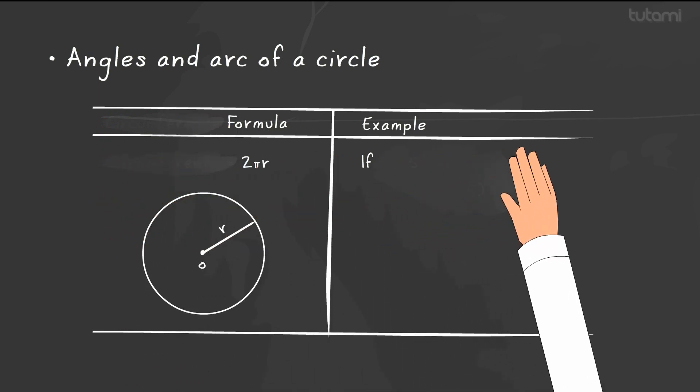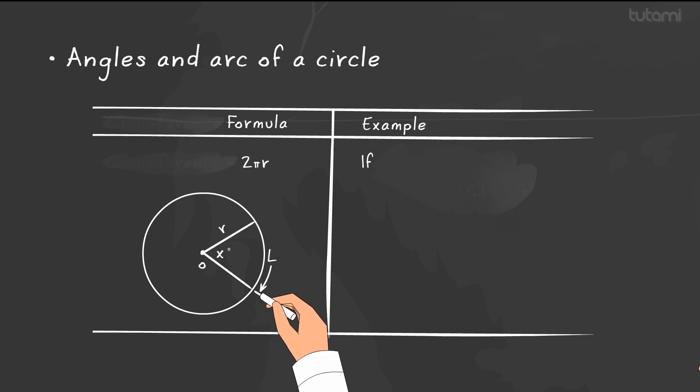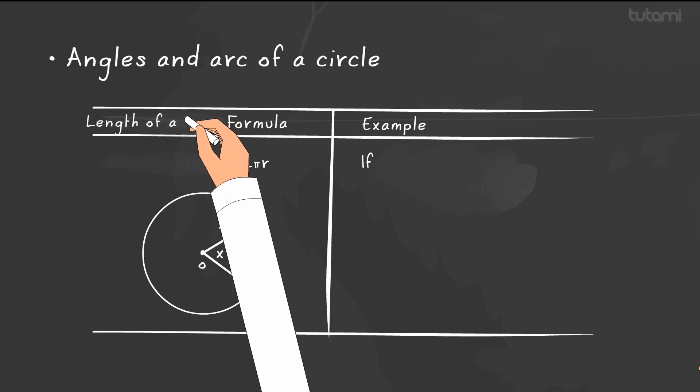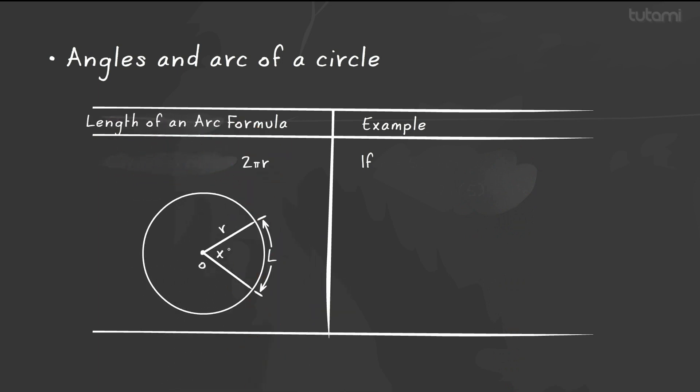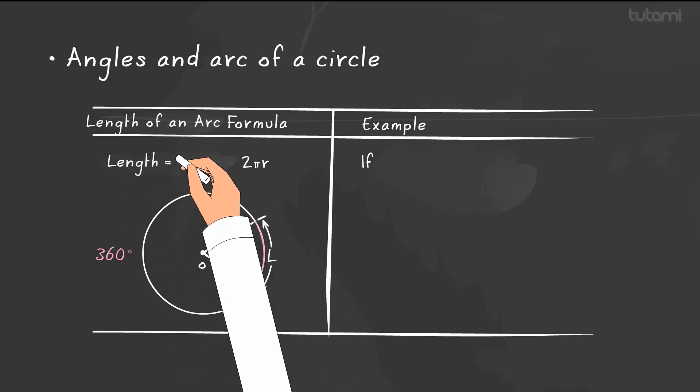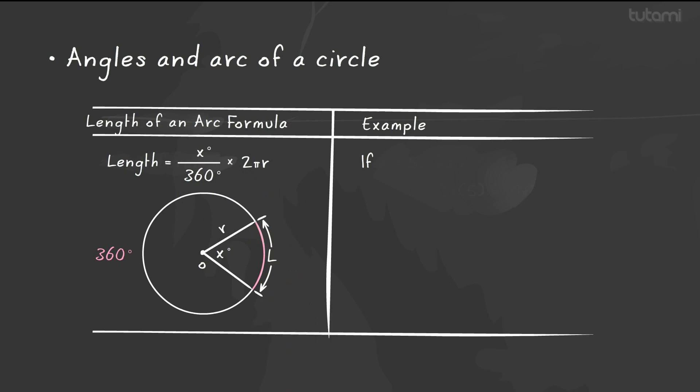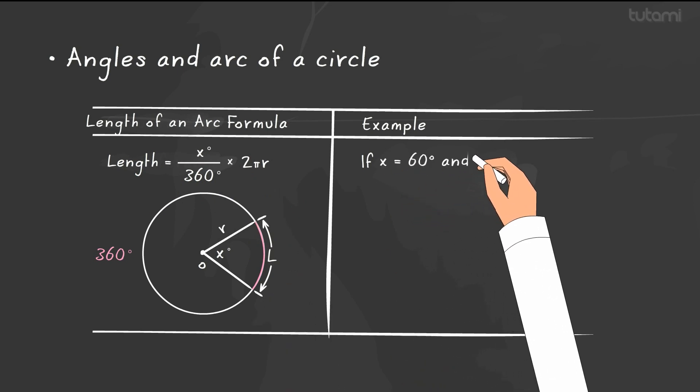The length of an arc is simply the original circumference formula multiplied by a specific fraction or percentage of the circle. Since the circle contains 360 degrees, it only makes sense to figure out the circumference and then multiply by the degree measure divided by 360. So if the angle is 60 degrees and the radius is 9...